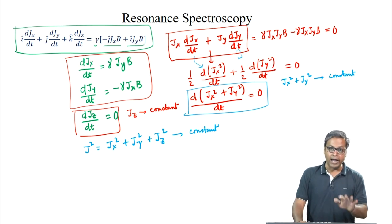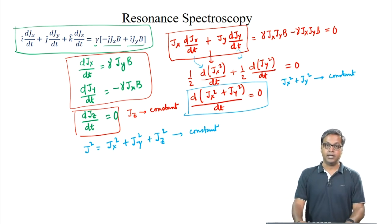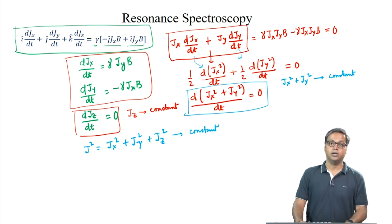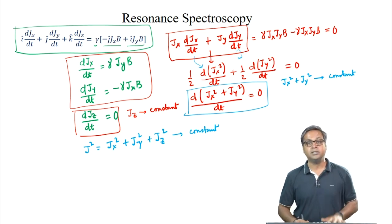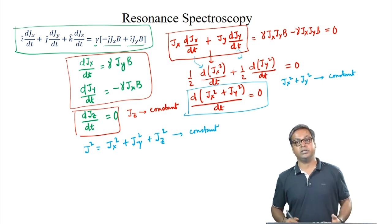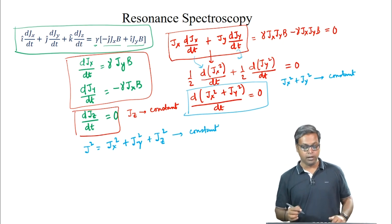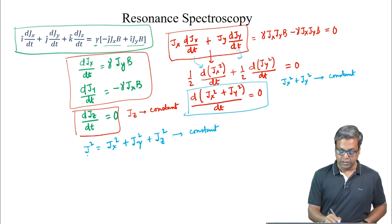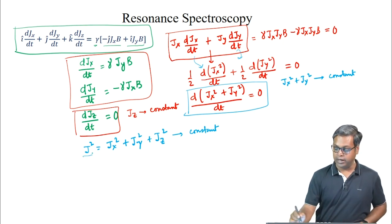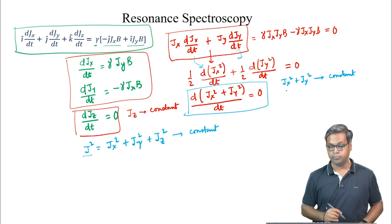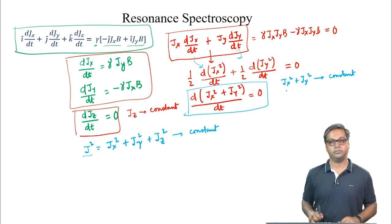We will end this lecture here. In the next lecture, we will discuss the consequences of what we have learned today — specifically, the consequences of J² and J_z being constants of motion.